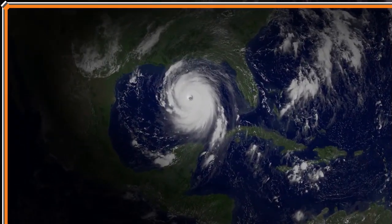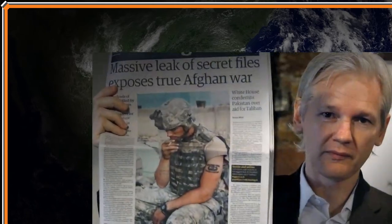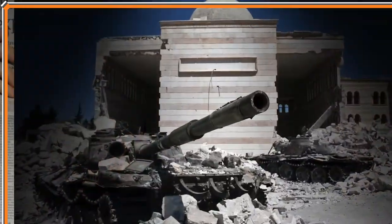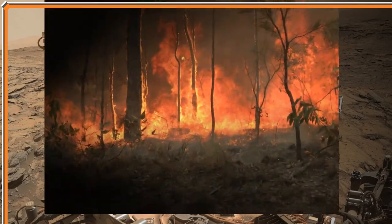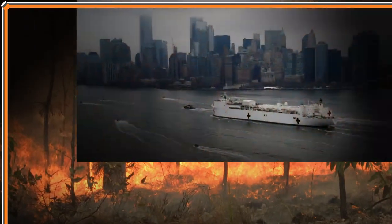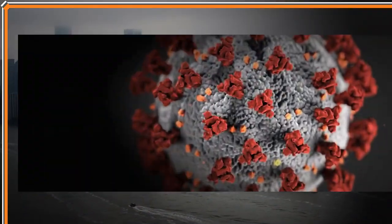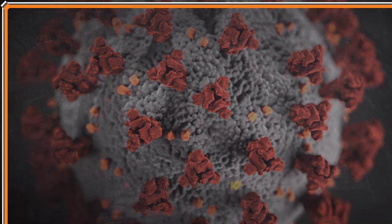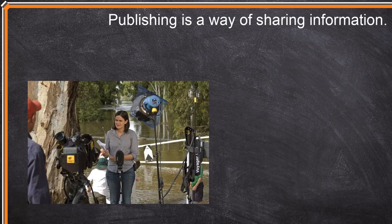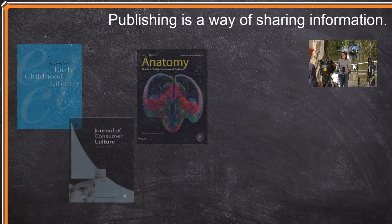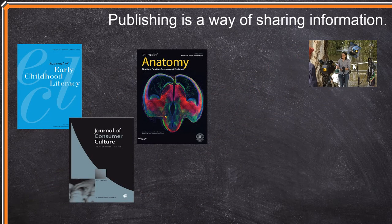This tutorial will help you learn about the information cycle and why it's important to consider when researching. When new discoveries are made or a major event happens and affects a community, information about the events and discoveries are shared with the world through publications. Publishing means to make information available to the public, and can refer to activities such as a reporter sharing her observations about an event, or a professor writing a research paper for a scholarly journal.